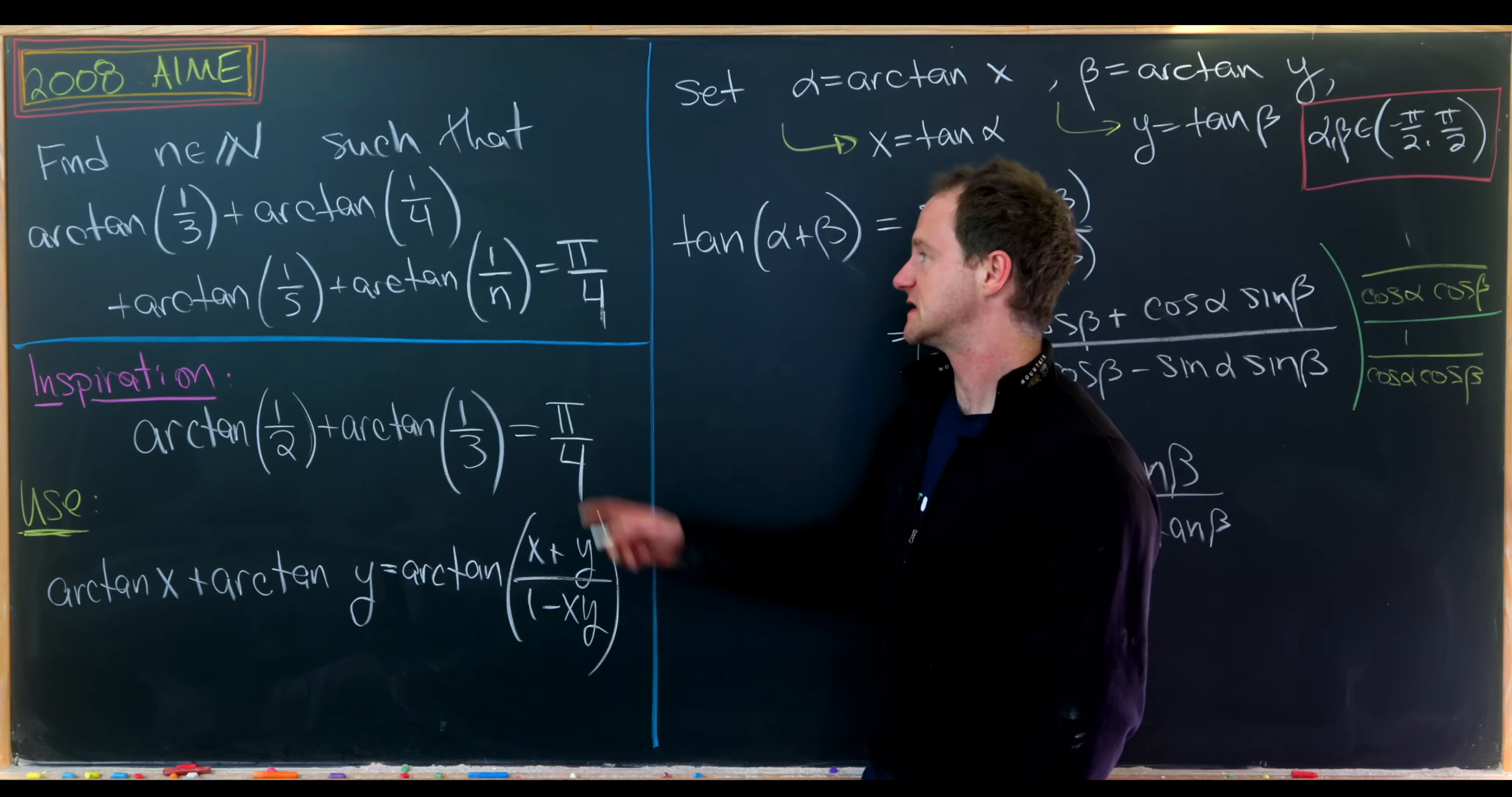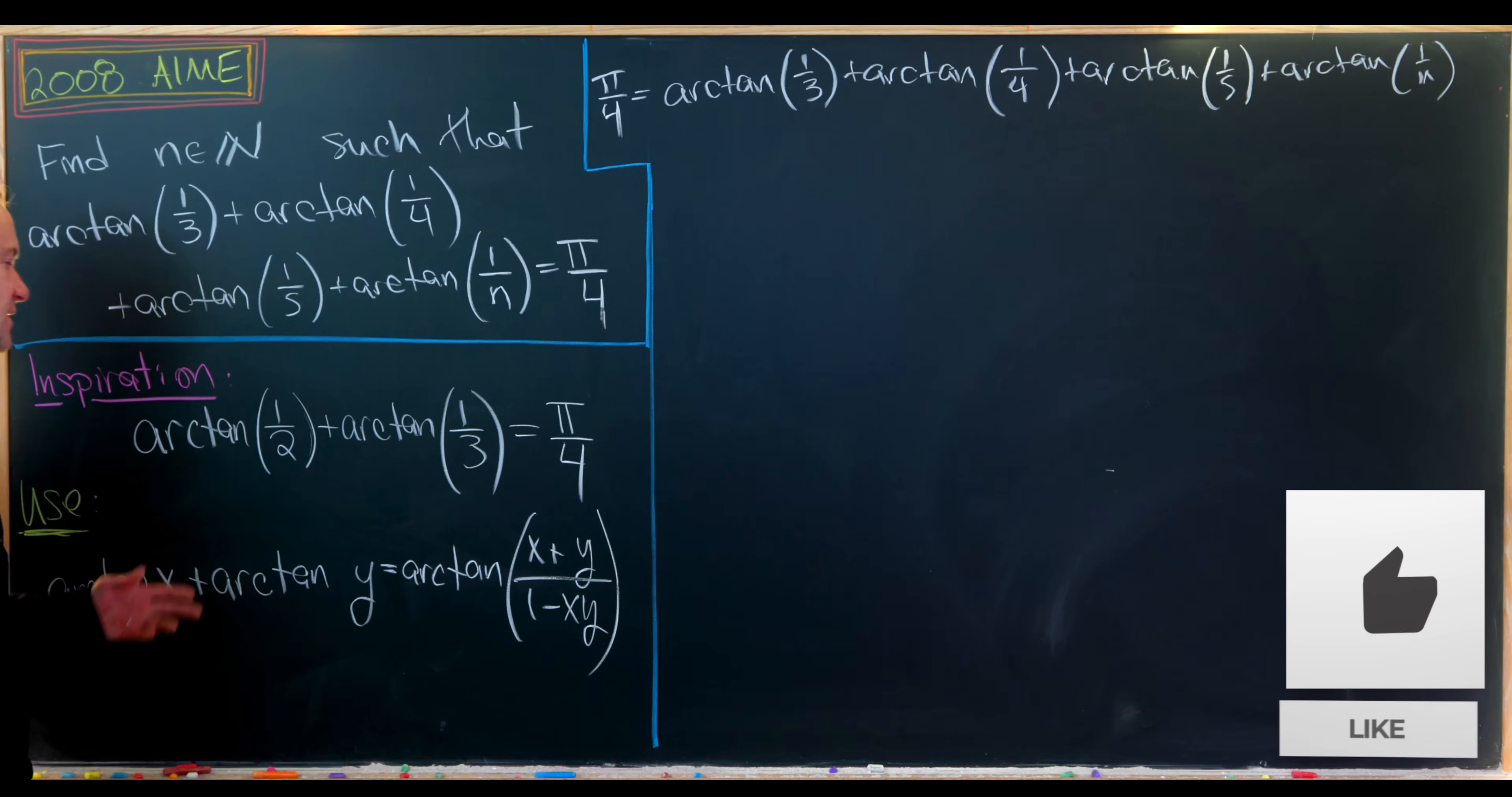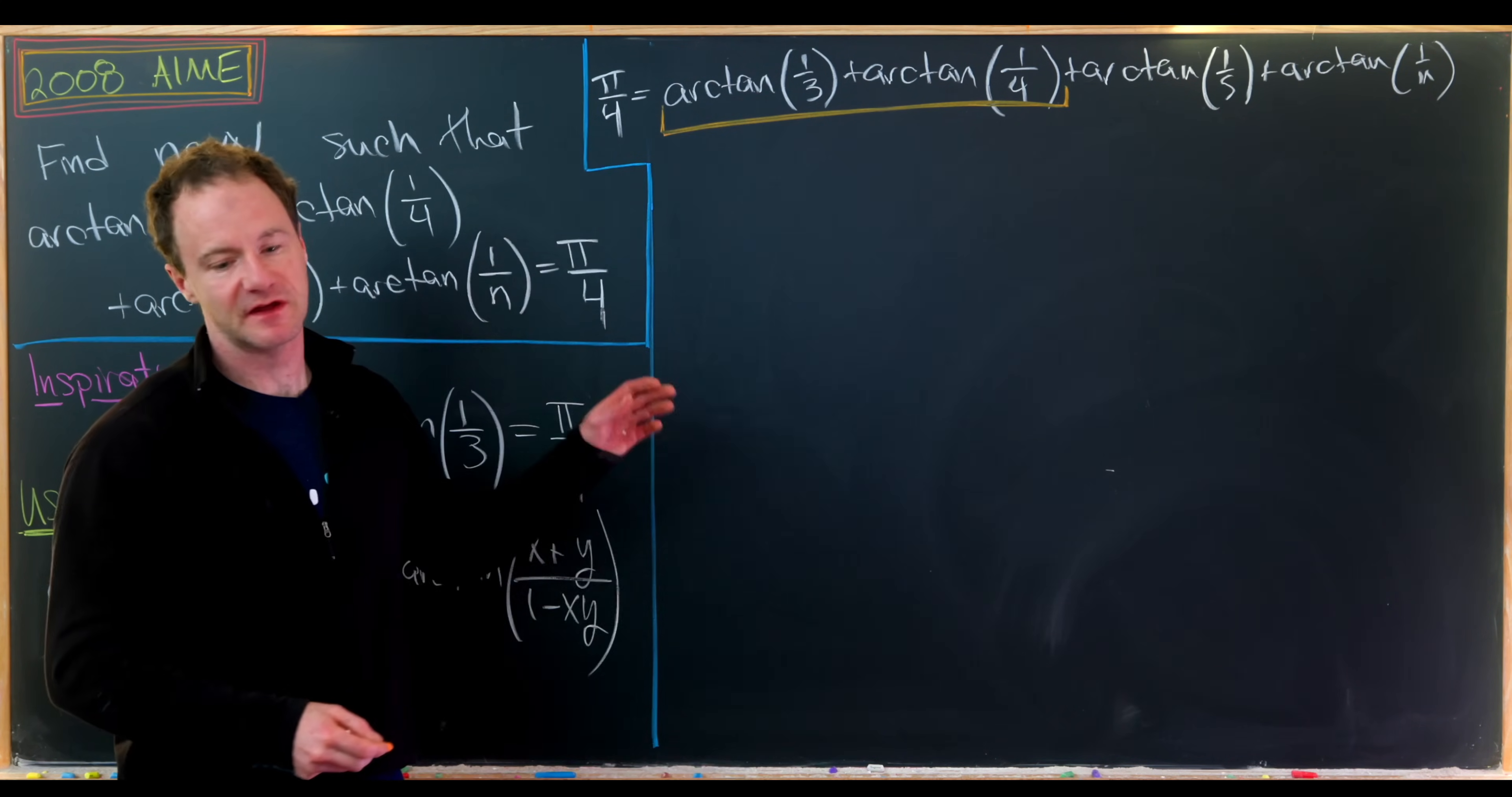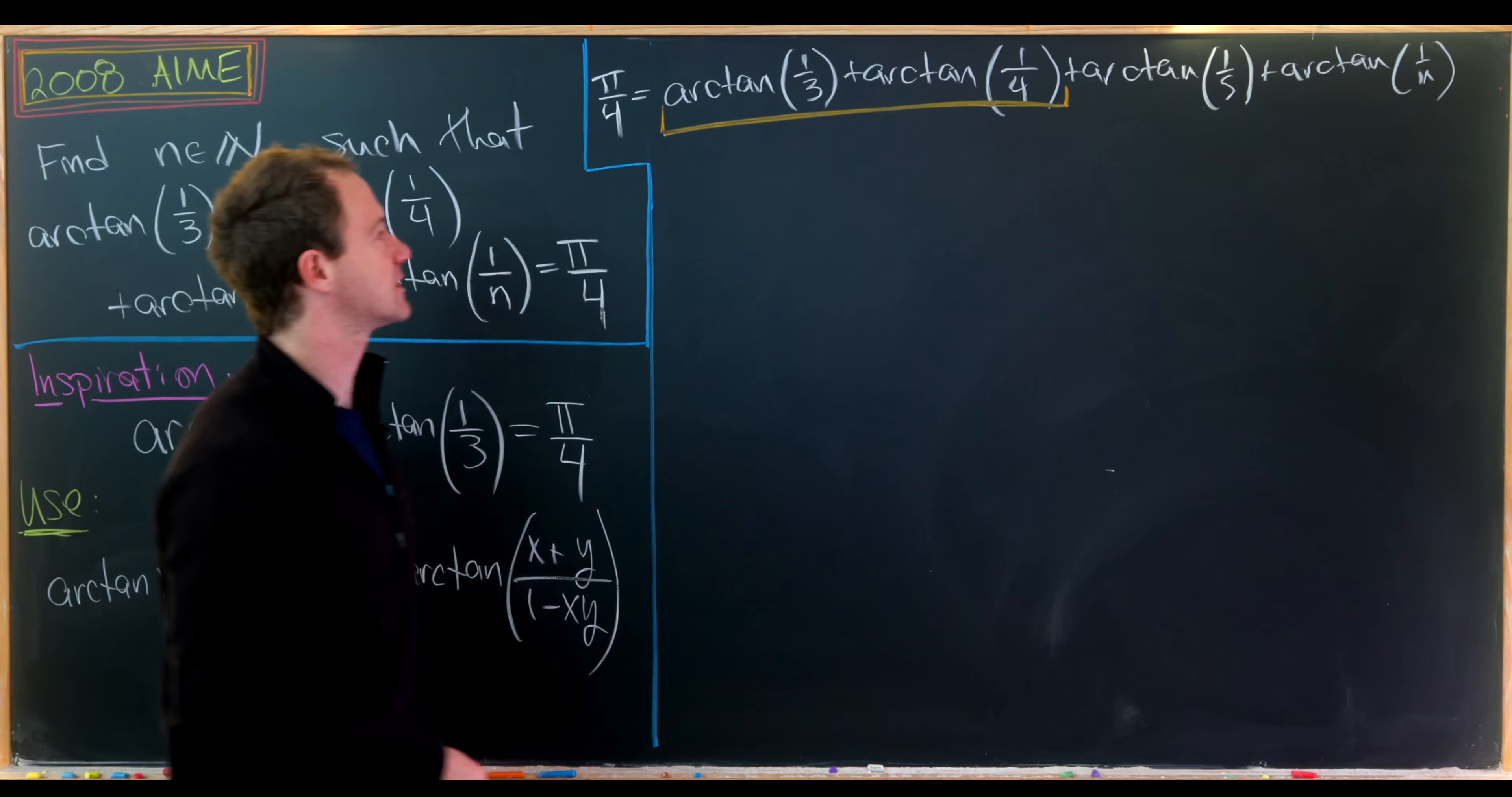Now that we're ready with that, let's get to solving our equation. There are a couple of strategies we could use for combining arctan terms using this formula. What I'll do is pair the first two, make that simplification, then pair that with arctan(1/5), and finally pair that with arctan(1/n). The calculation is easier this way.